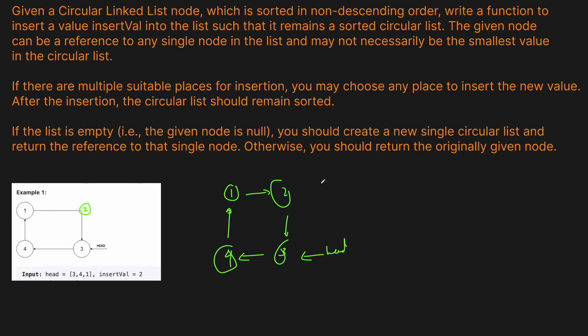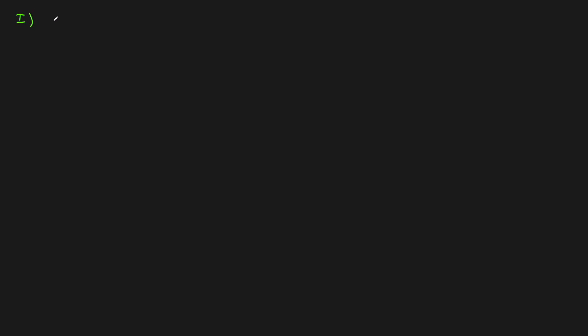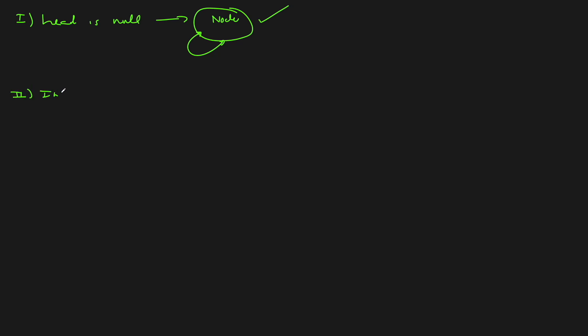Let's think about all the possible ways we can insert this node. The first case — and the most simple — is where the head given to us is actually null. In the case that head is null, all we have to do is create a new node, link it to itself to form a cycle, and return it. That's the most simple case — easy.